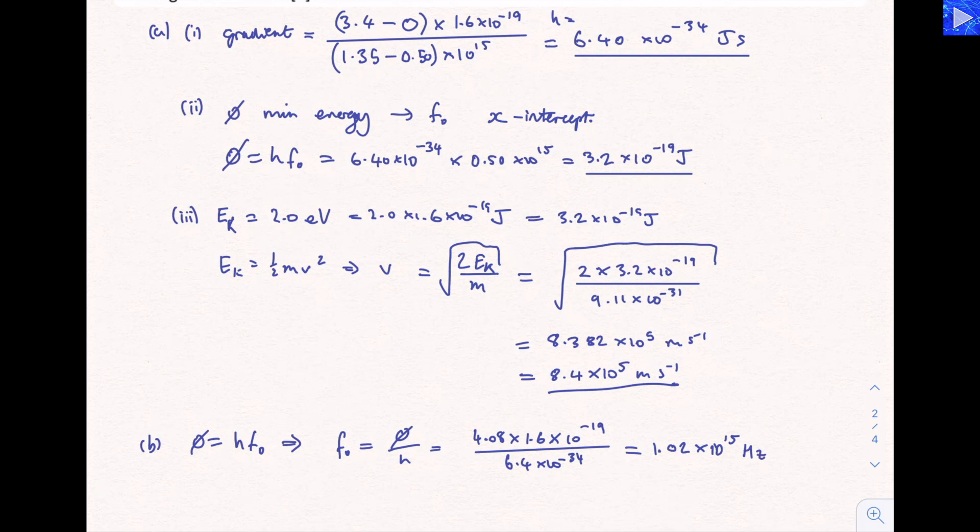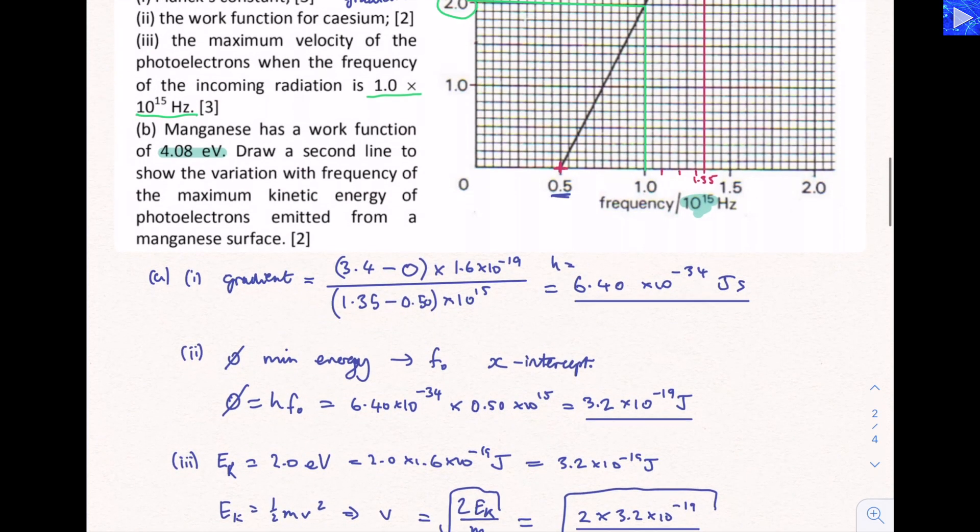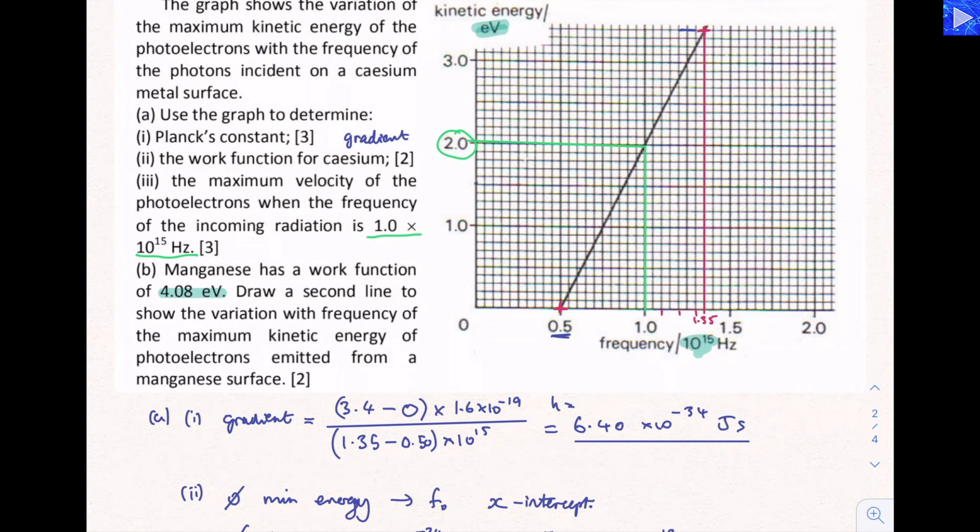So that's just past the 1.0 on our graph. I will use orange here so we can see what we're doing. If you've got a ruler, it's a good idea. Line your ruler up with the line you've already got and then just shift it along until the x-intercept is the right value. In my case, since I'm doing it on a tablet, I'm just going to grab that line with the same gradient and shift it along until it's just past the 1.0. Usually graph work, as long as you're accurate within half a small square, you should be fine. That's what our graph would look like for manganese. You need to keep the gradient the same and have the correct x-intercept. That's it.